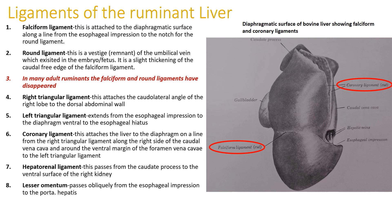Remember that the falciform ligament and the round ligament in some adult ruminants will not be functional or will have disappeared over time, but they can still be found in other adult animals.